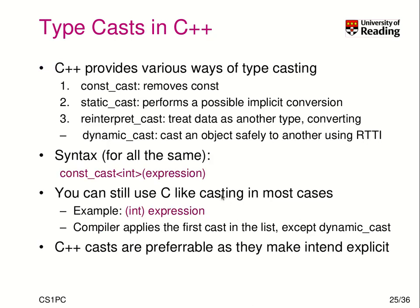Generally speaking, there are various levels of casts in C++. The first is const_cast, which removes the const qualifier from a data type. Next, we have static_cast, which performs possible implicit and explicit conversions. Then we have reinterpret_cast, which treats data as another type — for example, converting a pointer to a double. And lastly, we have dynamic_cast, which casts an object from one type to another using RTTI, which stands for Runtime Type Information.